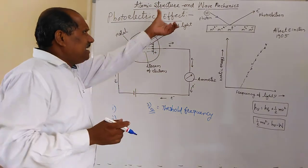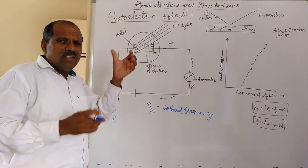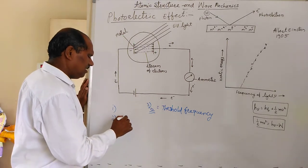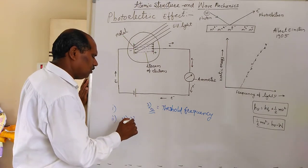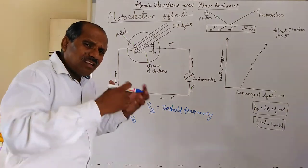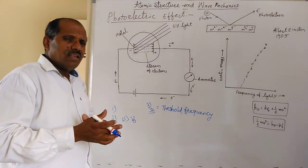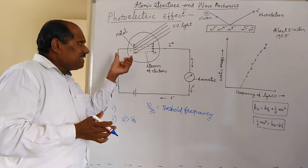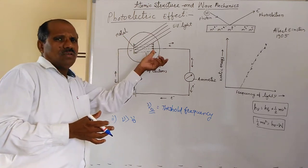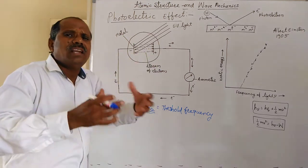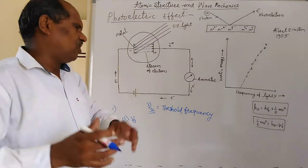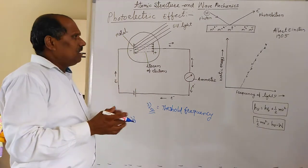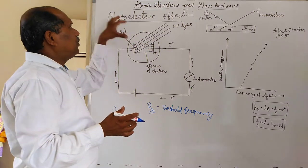Second observation: when the incident photon has much more energy — that is, nu is greater than nu-zero — then whatever extra amount of energy is associated with that incident photon will go with the ejected electrons in the form of kinetic energy. These are the observations regarding the photoelectric effect.